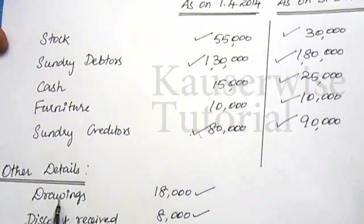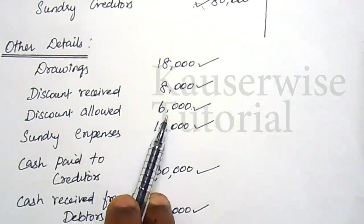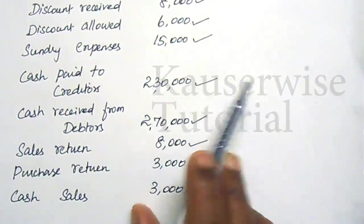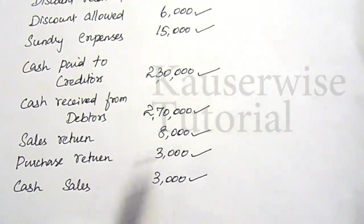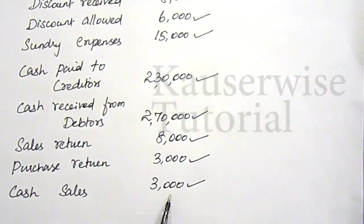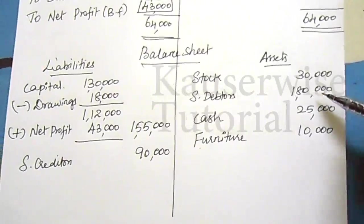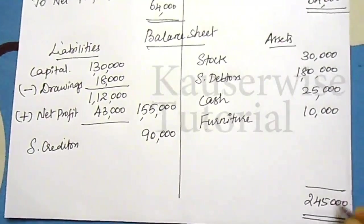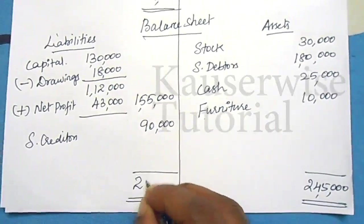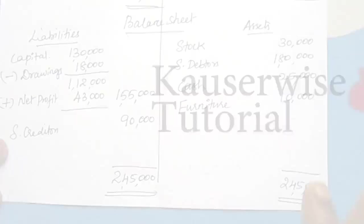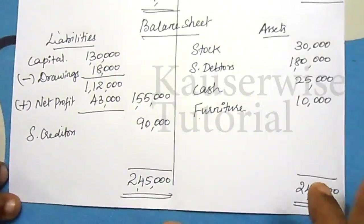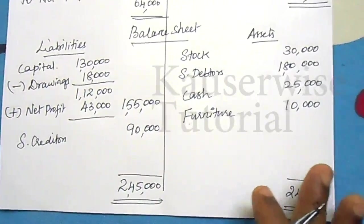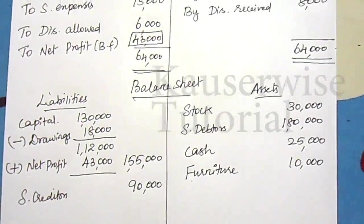All items from the other details have been accounted for: drawings under capital, discount received and discount allowed in the P&L account, sundry expenses in the P&L account, cash paid to creditors and cash received from debtors in the respective ledger accounts, sales returns and purchase returns in the trading account, and cash sales in the trading account. Total assets: ₹30,000 + ₹1,80,000 + ₹25,000 + ₹10,000 = ₹2,45,000. Total liabilities: ₹1,55,000 + ₹90,000 = ₹2,45,000. The balance sheet balances, completing the conversion method of converting single entry into double entry system.